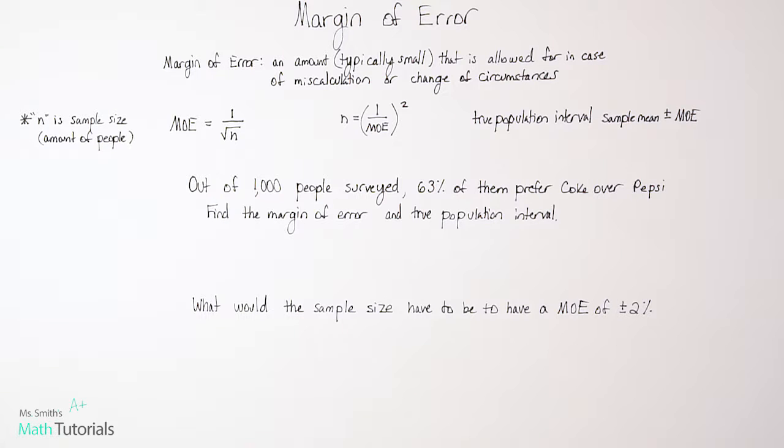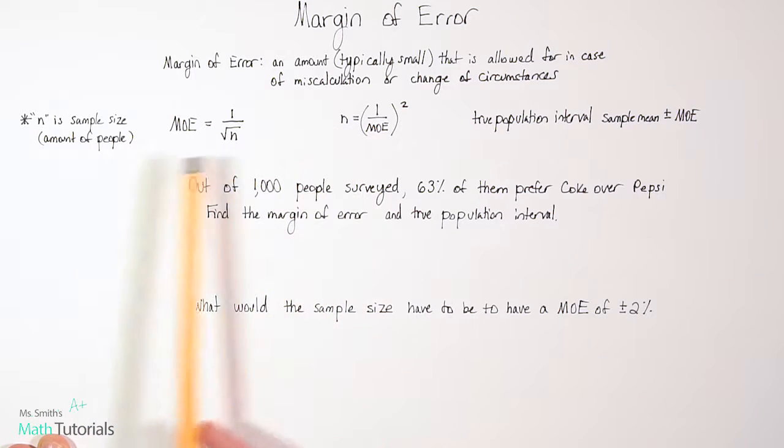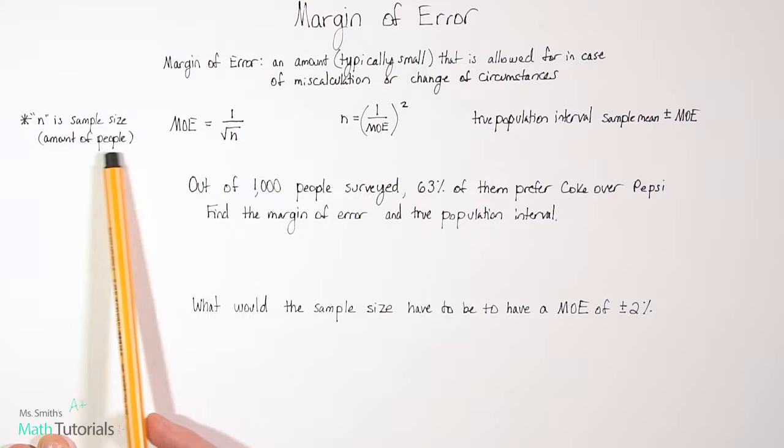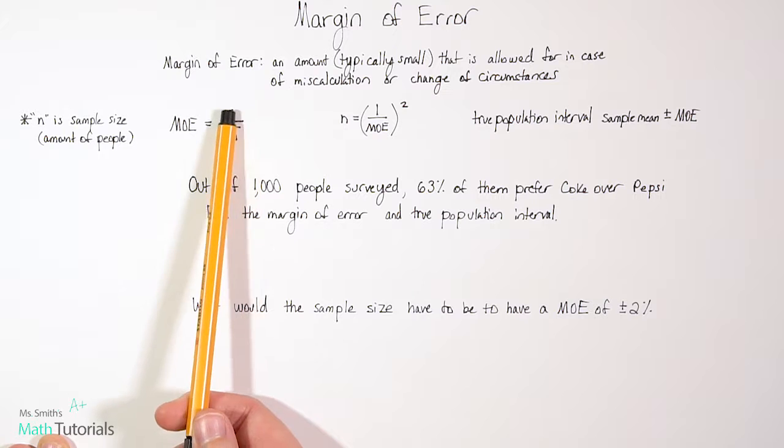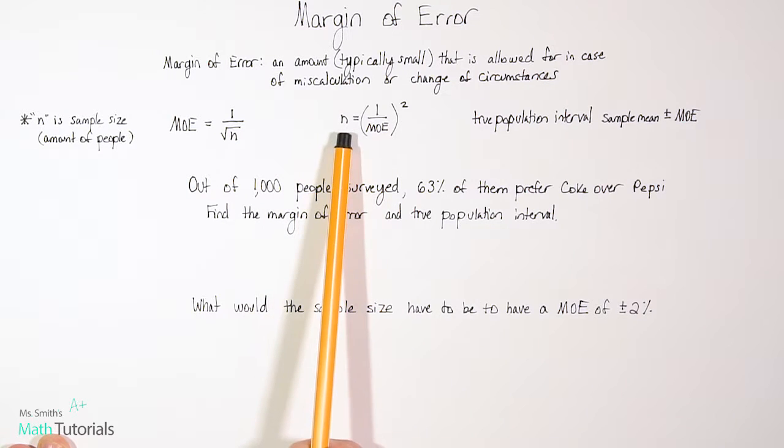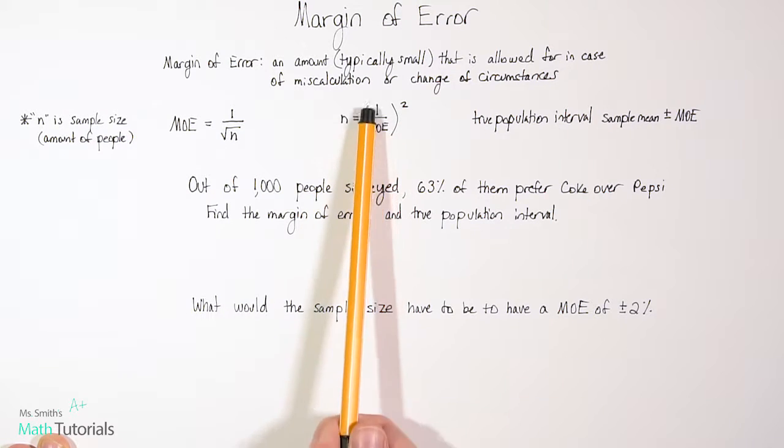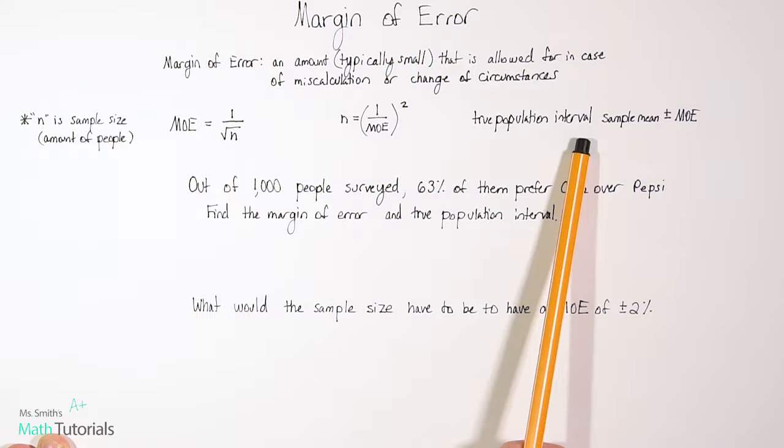We've got three formulas to talk about. One thing that's important to note is that n, which we use both here and here, n is the sample size. So it's the amount of people either were surveying or are part of the study or whatever it may be. We can find MOE, which stands for margin of error, by dividing 1 by the square root of n. So by the square root of how many people were surveyed or studied. We can also determine the sample size, if we need to know that, by dividing 1 by the margin of error and then squaring it.